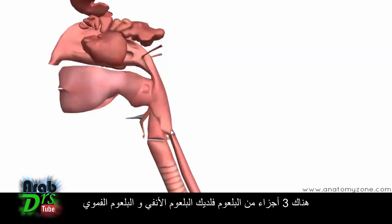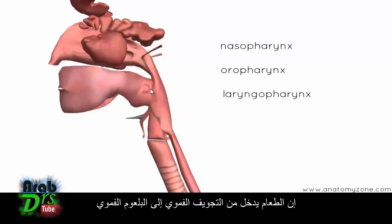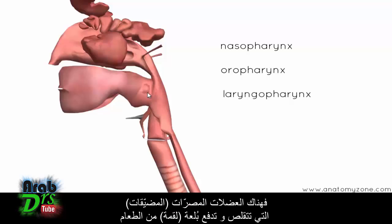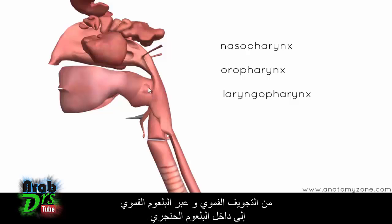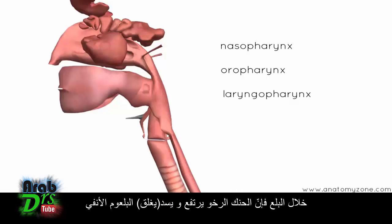There are three parts to the pharynx: the nasopharynx, the oropharynx, and the laryngopharynx. Food passes out of the oral cavity into the oropharynx, and then constrictor muscles contract and propel the bolus of food through the oropharynx and into the laryngopharynx, then down into the esophagus. During swallowing, the soft palate swings up and closes off the nasopharynx.